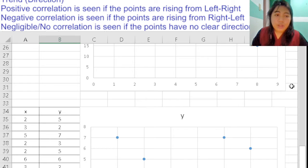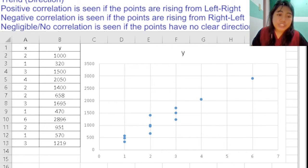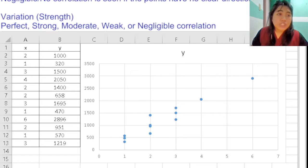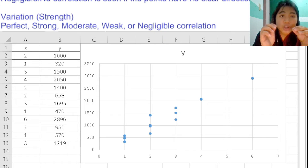Next, we're going to talk about variation. Variation in a scatterplot talks about the strength or the distance between points. We go from perfect to there being no correlation. Perfect is when the points are in a perfect straight line, and as we go weaker and weaker in description, the points are farther and farther apart.